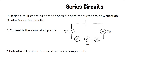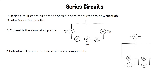The second rule is that potential difference is shared between the components. So if you take the potential difference across the cell or the battery, that potential difference is going to be shared between any bulbs in the circuit. So if the cell has a potential difference of six volts, you'd expect the bulbs to have potential differences of three volts each, assuming they're identical bulbs.